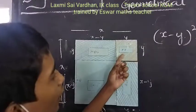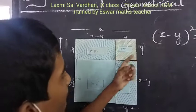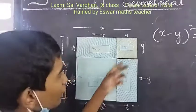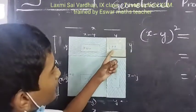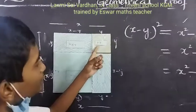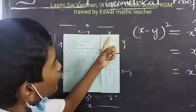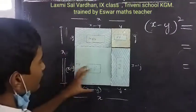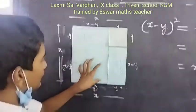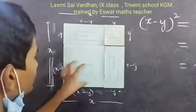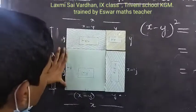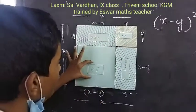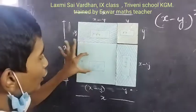And this is a square of side Y. So, area of the square equal to Y into Y, which is Y square. So, here this is a square. So, we get X minus Y, X minus Y. So, the area of this is X minus Y whole square.